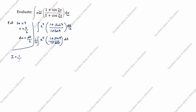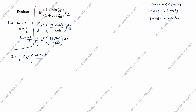So I equals 1/2 times the integral of e^t times the bracket (1 + sin t)/(1 + cos t). We apply the identity: cos2x = 2cos²x − 1, bringing the −1 to the other side gives 1 + cos2x = 2cos²x. Therefore 1 + cos t = 2cos²(t/2). We substitute this: the denominator becomes 2cos²(t/2), close bracket, dt.